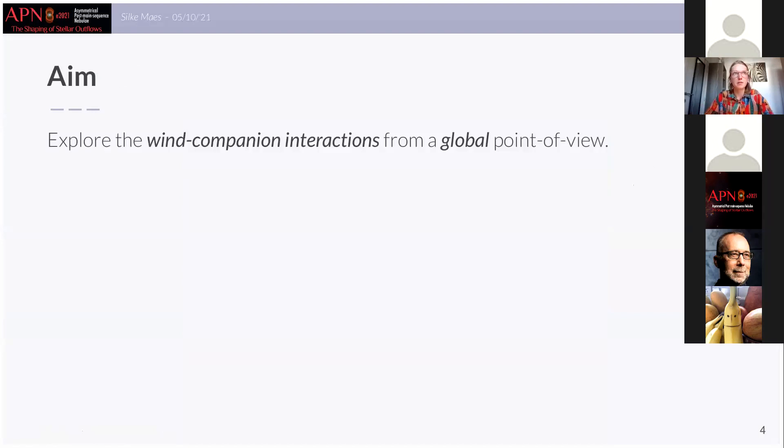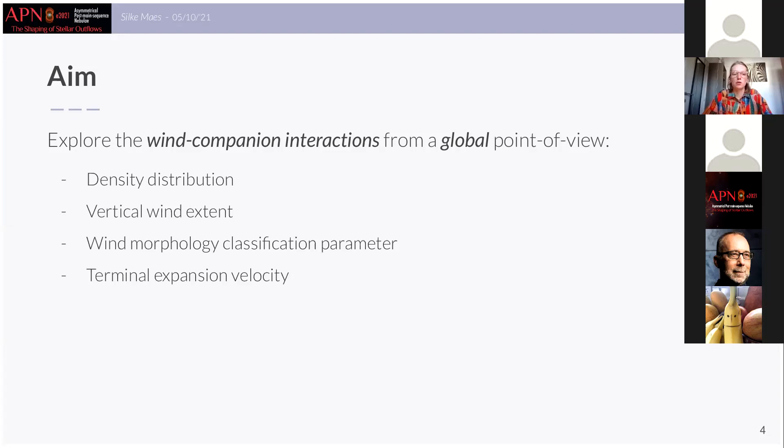The aim of the work in our paper is to explore these wind companion interactions from a global point of view using 3D theoretical models. So we focused on the following four components in our paper. We analyzed the global density distribution of the HB outflow with the focus on the vertical wind extent. Next we introduced a wind morphology classification parameter and lastly we also investigated the effect of the companion on the terminal expansion velocity.